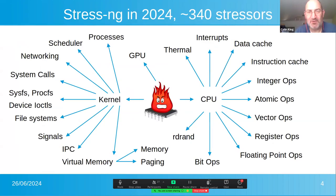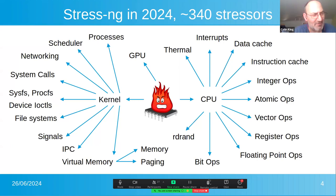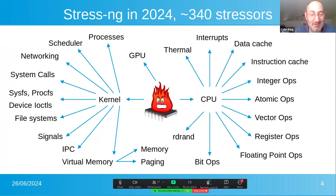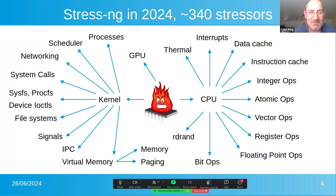So, StressNG in 2024 — where are we now? Quite a lot of work has been going on in the last two years to cover more of the kernel and processor space. We currently have over 340 stressors. These can stress the CPU in many different ways: thermal, interrupts, cache, integer, floating point operations, atomic operations, register ops, bit shifting operations, random number generators, and so forth. We also had folks from Fedora provide a GPU stressor, which is really useful.